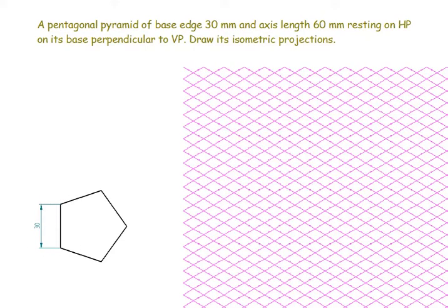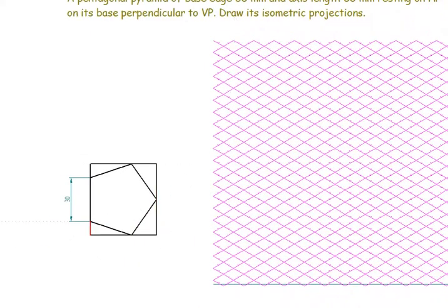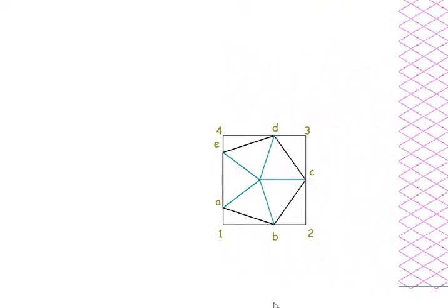After constructing the pentagon, I'm going to enclose it inside a box. I'll label these points and give numbers 1, 2, 3, 4 and letters A, B, C, D for all the corners. We need to give the dimensions because all the slant edges in the top will be drawn in thick lines, so we need to find the distance.